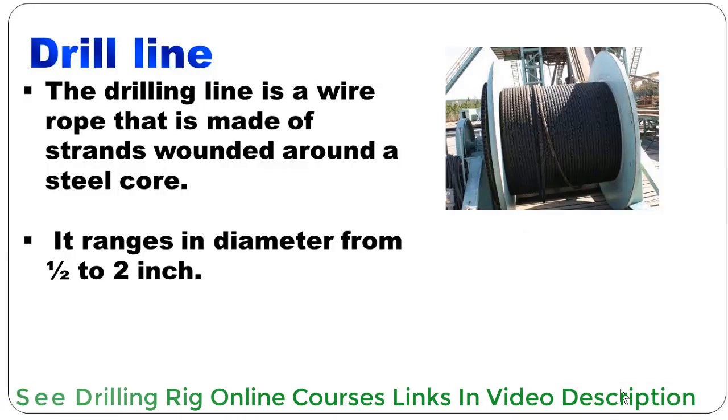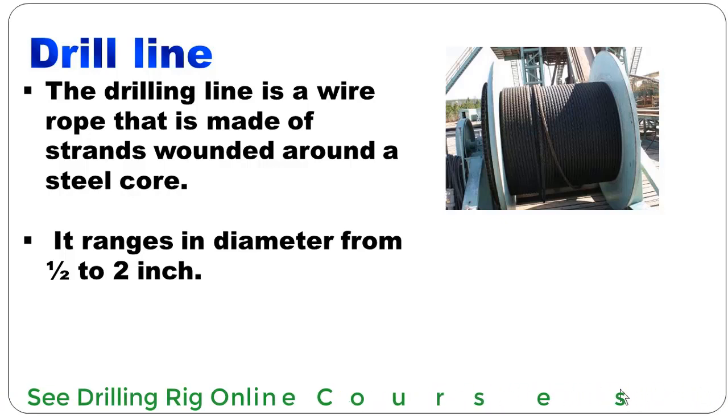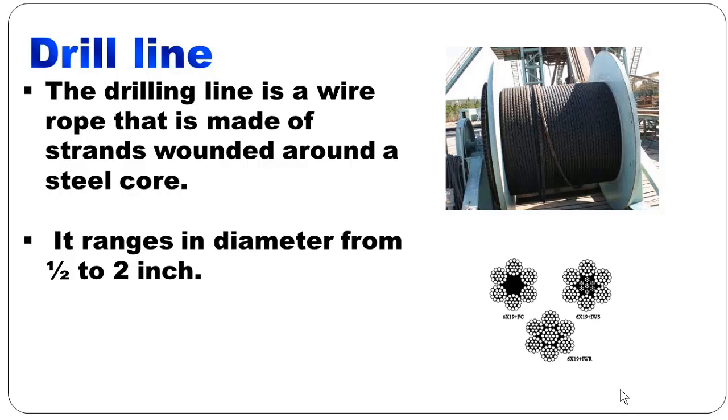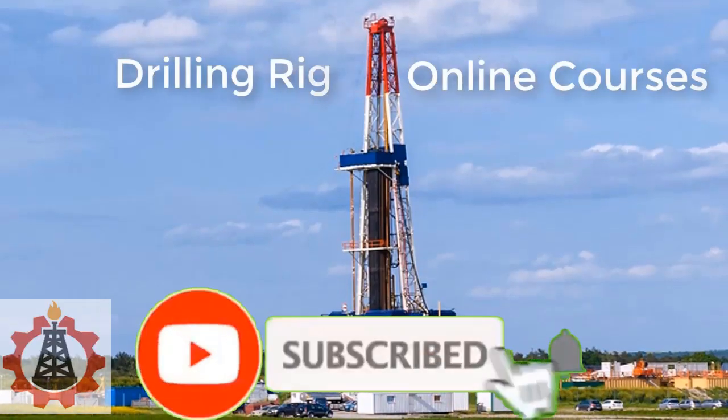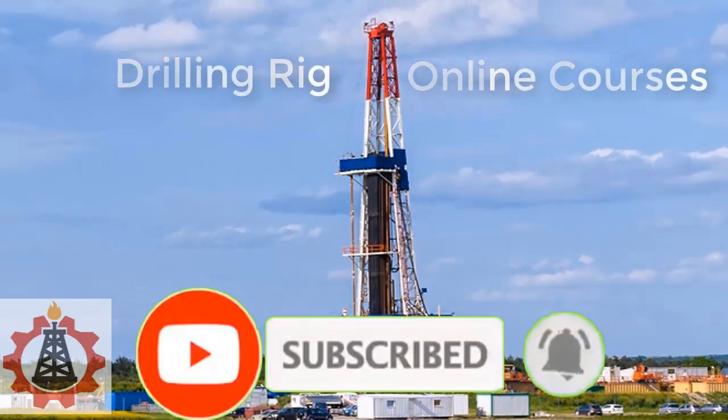The drilling line is a wire rope that is made of strands wounded around a steel core. It ranges in diameter from half inch to two inch. Please subscribe and press bell icon to see more videos.